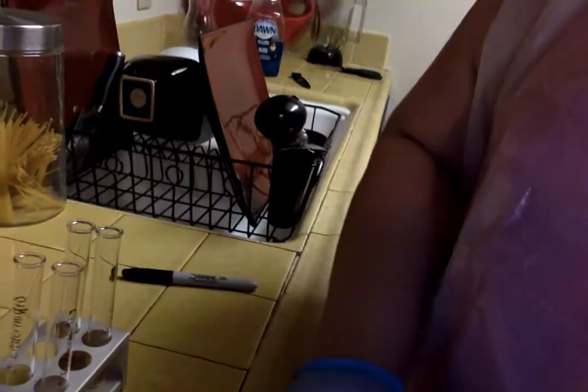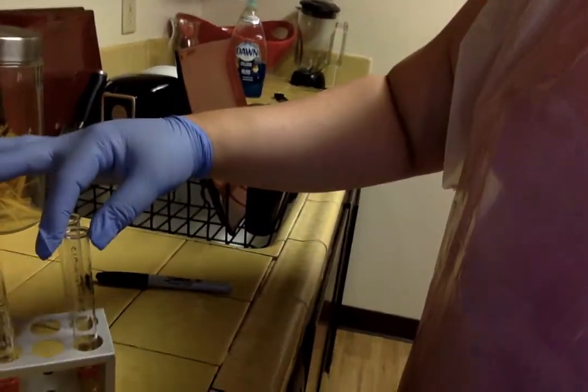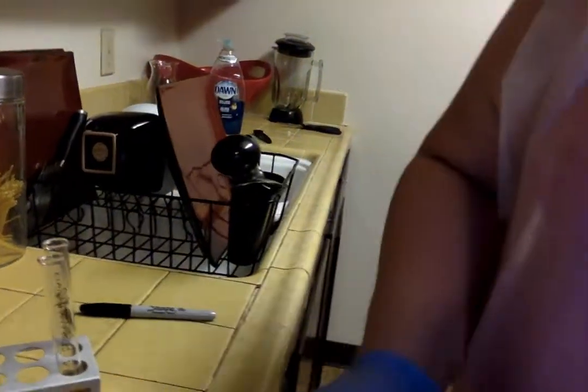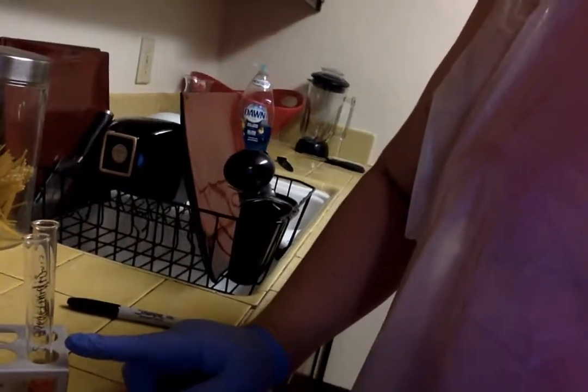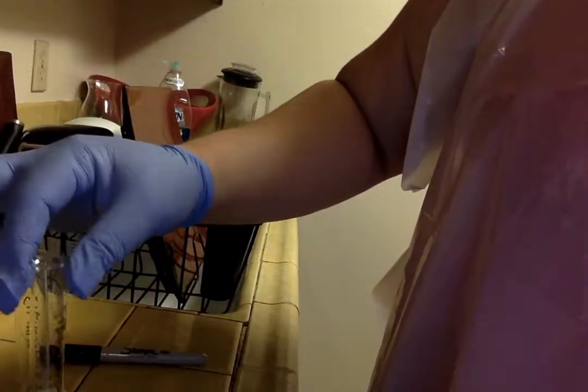And then the actual results here. So the first test, the methyl red test. Here is my first one, the Staphylococcus epidermidis. And the results for that one. It's been sitting for a little bit, but you can see it's mostly yellow versus the red. And for the E. coli, it's mostly red.